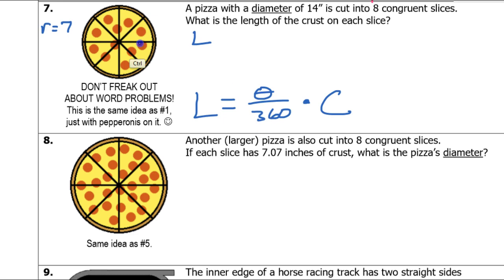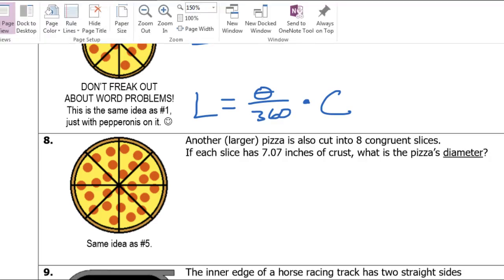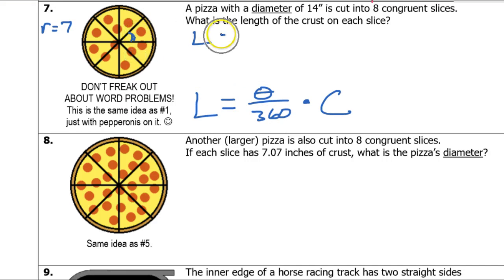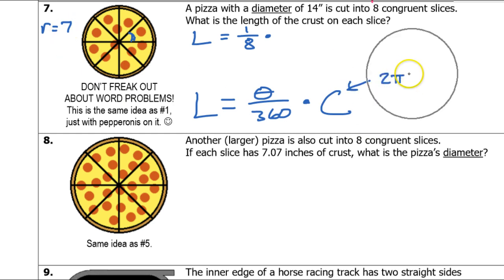This fraction is always found by taking the degrees of the little angle — which is the same as the arc measure — and dividing by 360. But I don't have to do that this time, because we already know that the pizza is divided into 8 slices. So if I look at 1 slice, I already know that that is 1/8 of the pizza. I don't have to figure out how many degrees that is — I already know the fraction is 1/8. So it's 1/8 times the circumference, which is 2πr, so that's 2π times 7, which is 14π.